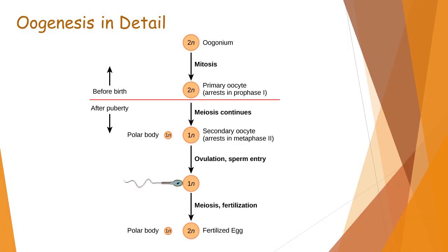We will now discuss the process of oogenesis in detail with the help of this flowchart. There is a very peculiar thing about oogenesis: in females it starts even before birth. In spermatogenesis the process starts at puberty, but in females oogenesis starts even before birth. The process starts with oogonia, which first increase their number by mitosis and then undergo growth to form primary oocytes.